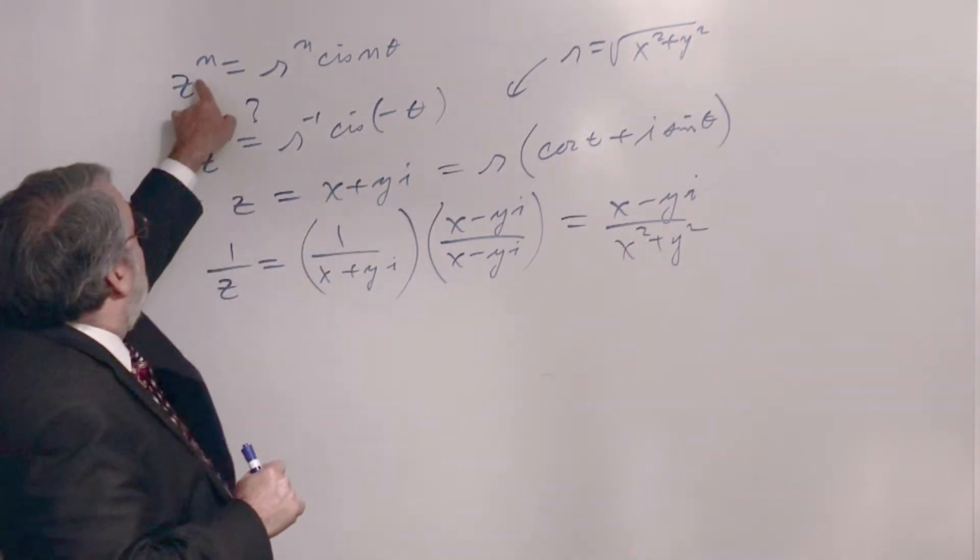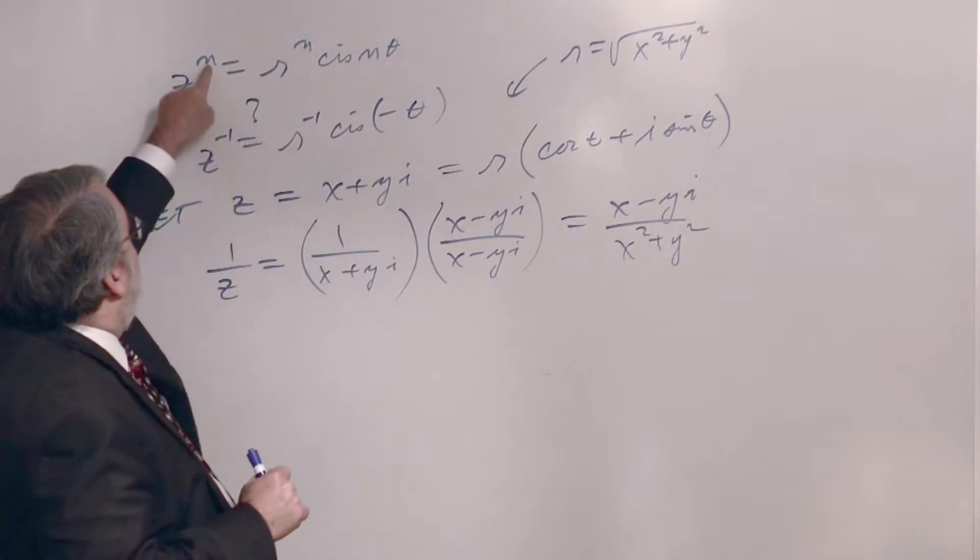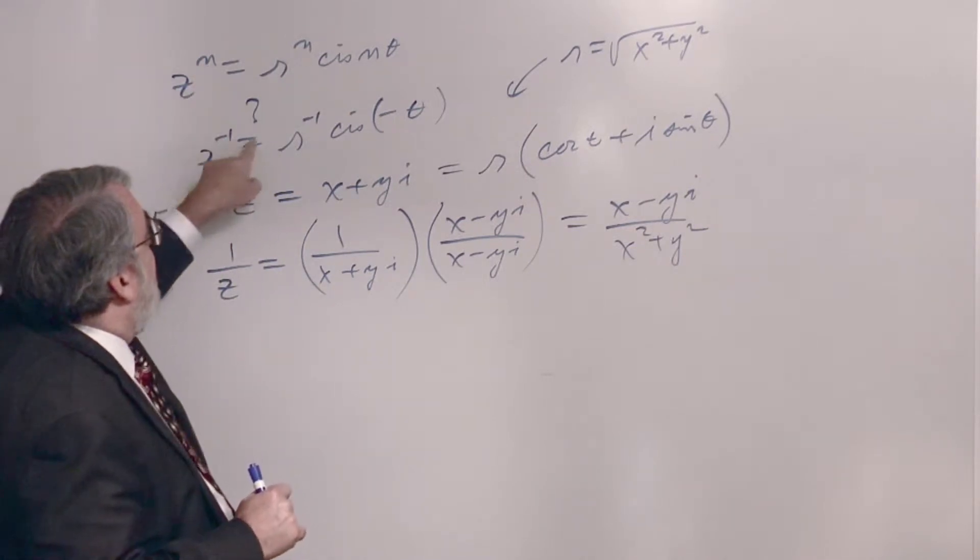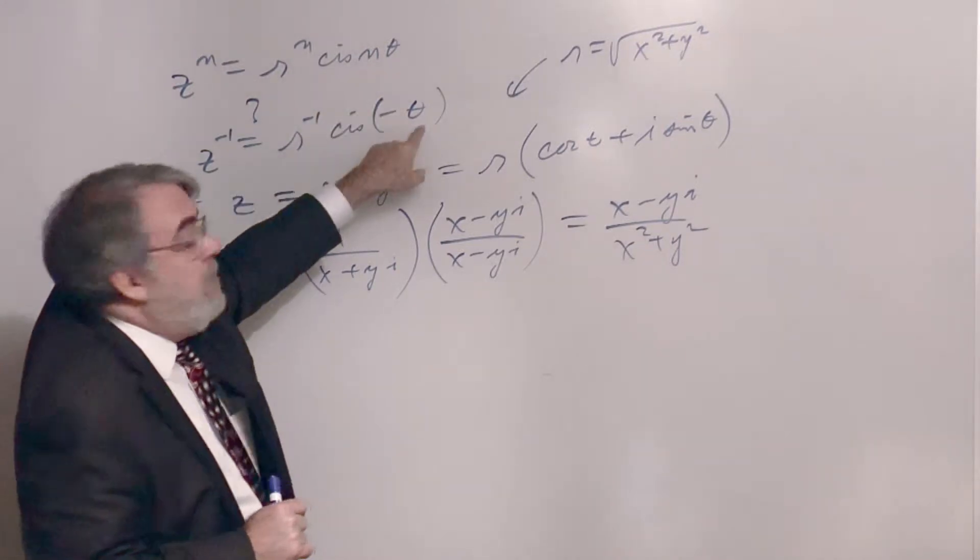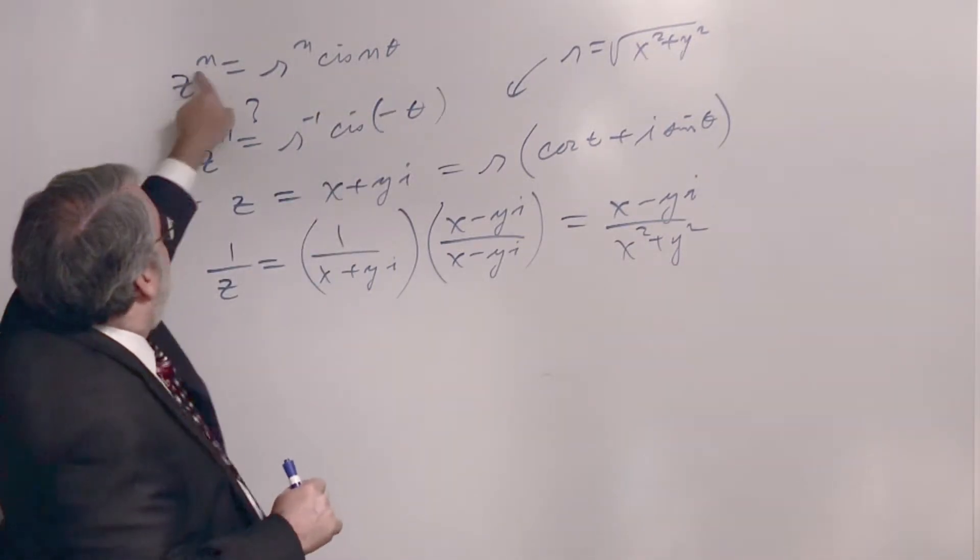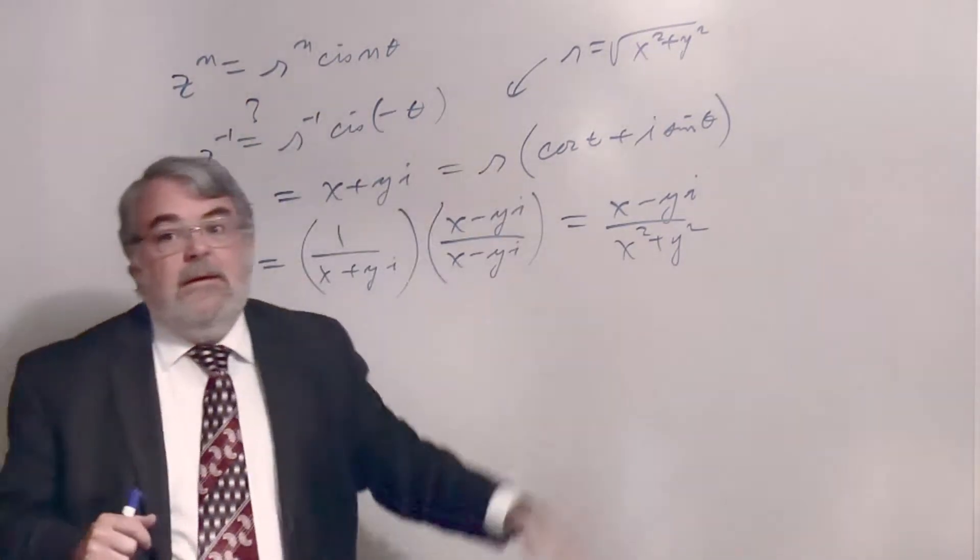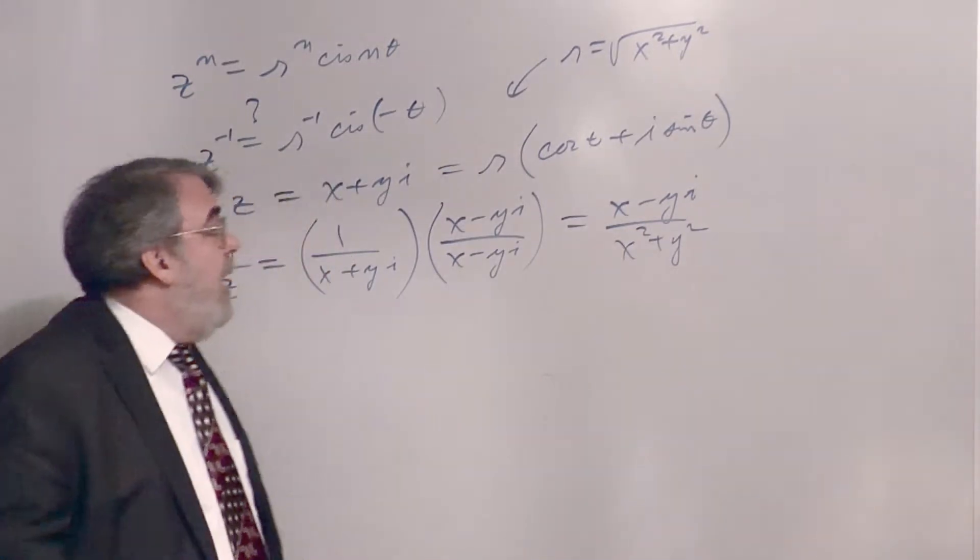I want to show that, here's the Moivre's theorem, that if n is negative 1, then z to the minus 1 is r to the minus 1 cis negative 1 times theta. In other words, that this pattern holds when n is negative 1. Okay, will we settle for that?